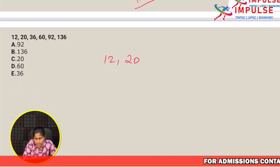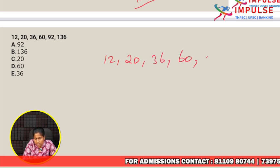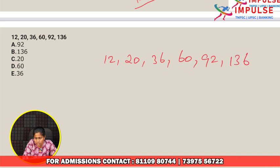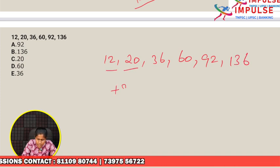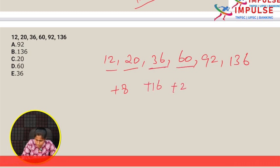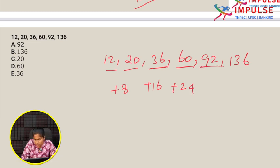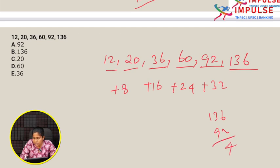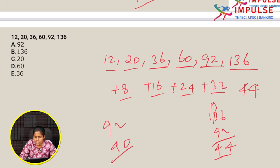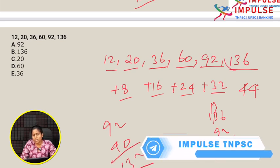Next series: 36, 60, 92, 136. Differences: first to second is plus 8, second to third is plus 16, third to fourth is plus 24 — adding multiples of 8. Fourth to fifth difference should be plus 32, fifth to sixth should be plus 40. So 92 plus 40 is 132, but 136 is shown. The wrong number is 136.